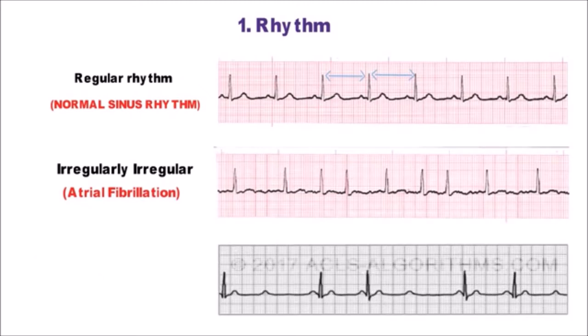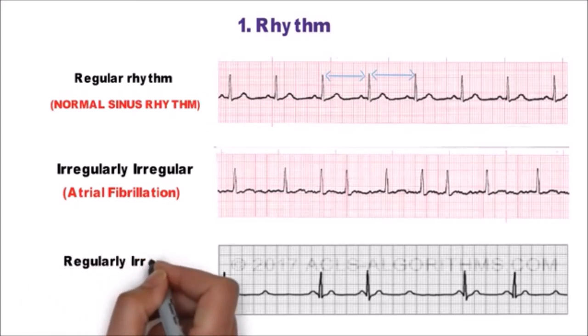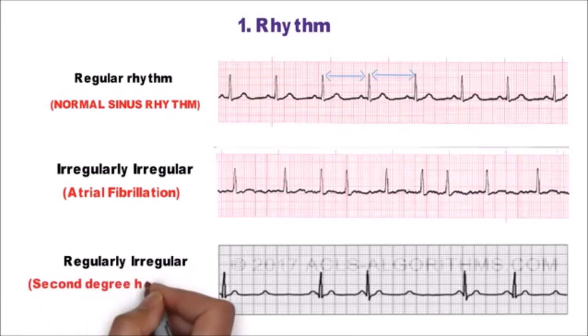Now look at this ECG. Normal regular rate with regular drop beat. So rhythm is regularly irregular which is seen most commonly in 2nd degree heart block type.